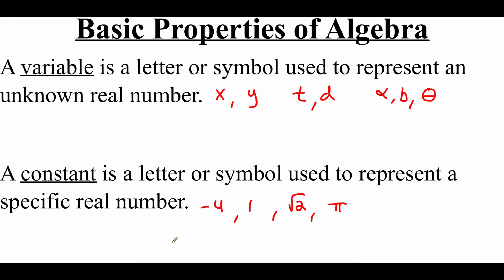In algebra, you'll see combining variables with constants using some sort of operation to create an algebraic expression. So something like x plus 3 is an algebraic expression, t minus 7 is an algebraic expression, and theta minus pi is an algebraic expression — because we're using a variable combined with a constant using some sort of operation.